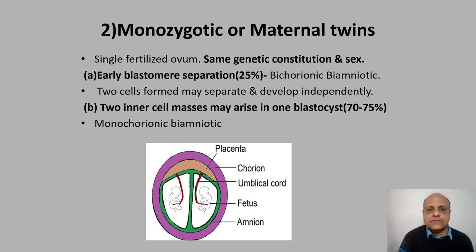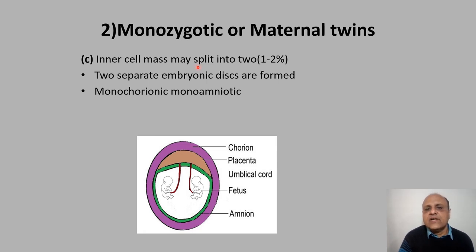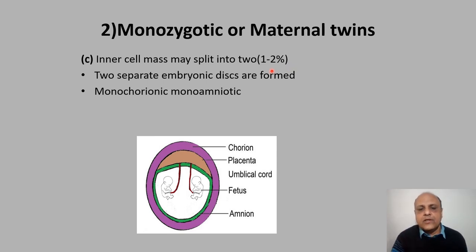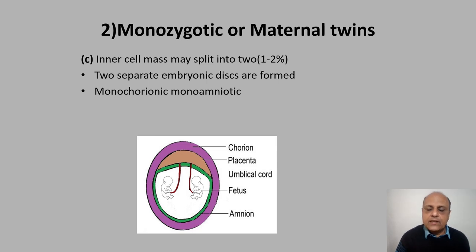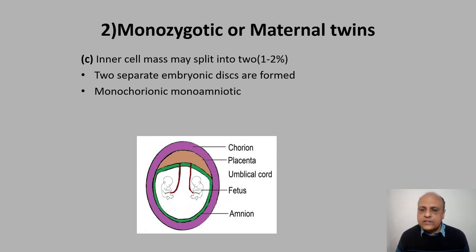The third scenario, occurring in 1 to 2% of cases, is when the inner cell mass is one but splits into two. This results in a common amniotic cavity and common chorion for both twins — the scenario is monochorionic monoamniotic. Two separate embryonic discs are formed from the one inner cell mass that splits into two.